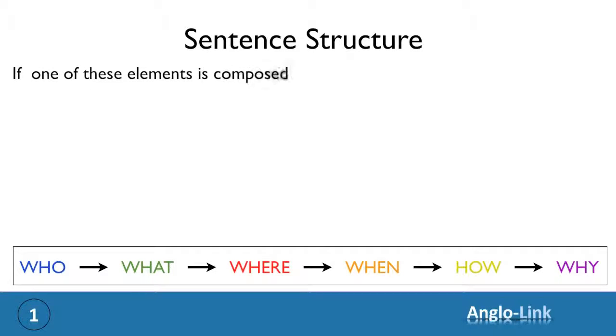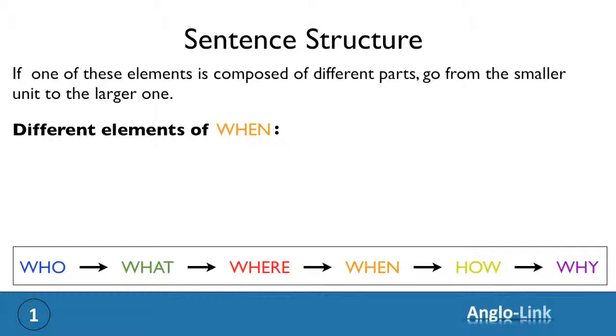Now, if one of these elements is composed of different parts, we usually go from the smaller unit to the larger one. For example, if there are different elements of when, the conference started at 10 am, on Tuesday, last week. The smaller element of when, time at 10 am, day on Tuesday, and then week, last week.